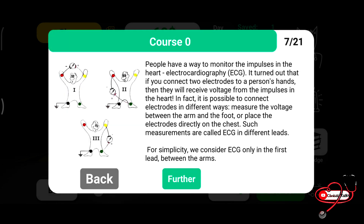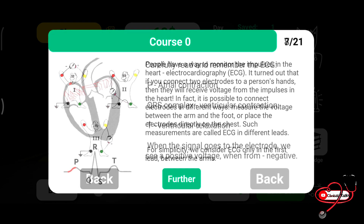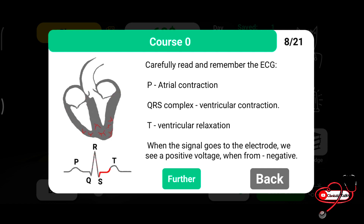People have a way to monitor the impulse in the heart, which is called ECG. You can see lead 1, lead 2, and lead 3. Lead 1 is attached to the right arm and left arm. Lead 2 uses the right arm and left foot. Lead 3 uses the left arm and left foot. It is also possible to place electrodes directly on the chest. For simplicity, we consider ECG only in the first lead between the two arms.